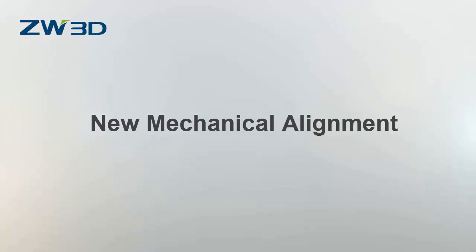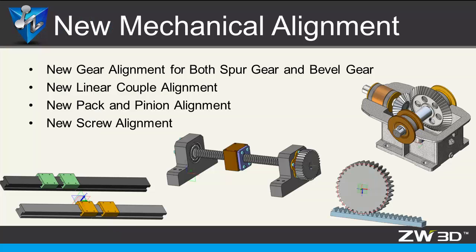Mechanical alignment in ZW3D 2016: a new mechanical alignment module has been added. The new module can provide the following functions for the user: gear alignment for both spur and bevel gear, linear couple, pack and rack alignment, and screw alignment. Next, let's use some examples to demonstrate how to use these new functions.